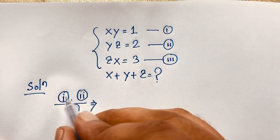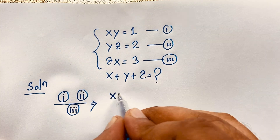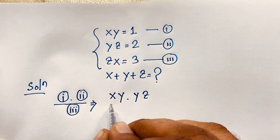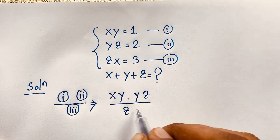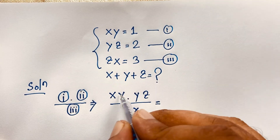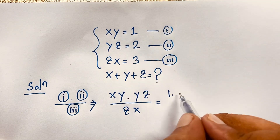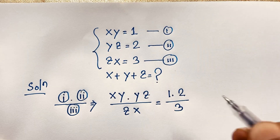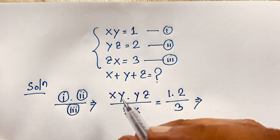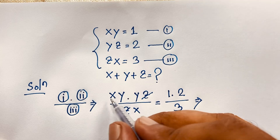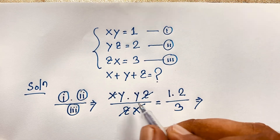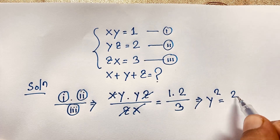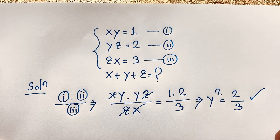The first equation is xy, times the second equation yz, over the third equation zx — equal to 1 times 2 over 3. The z's cancel out, the x's cancel out, leaving y times y, which is y squared equals 2 over 3. So we find y² = 2/3.